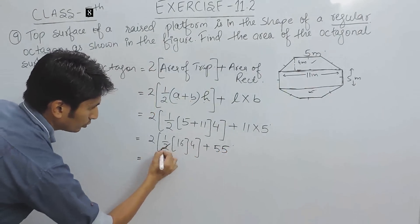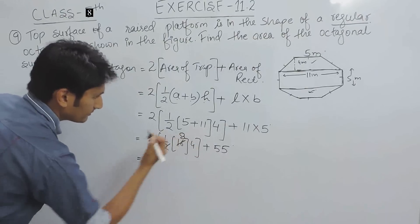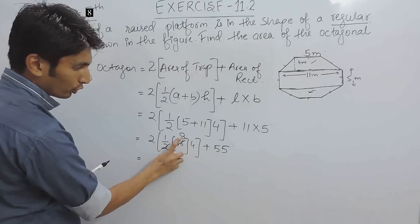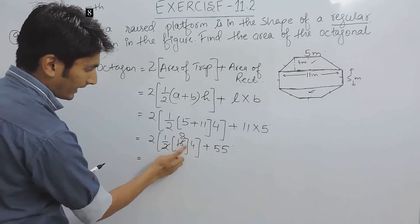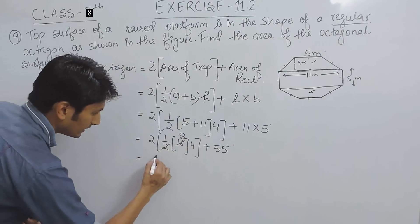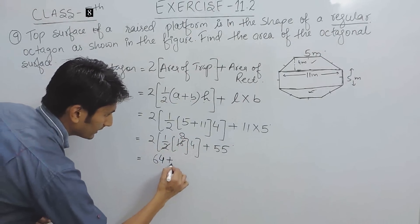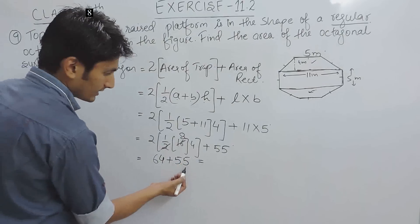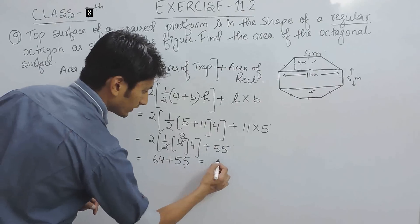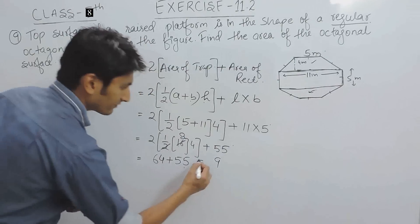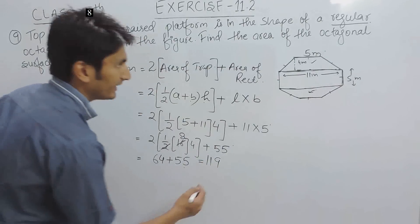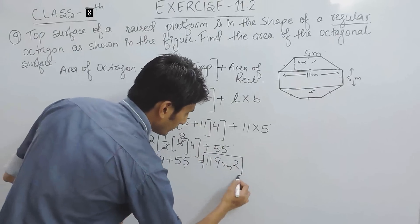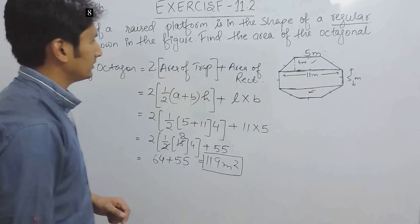So, this is 2 multiplied 8 times and this is 8 into 4 is 32 and 32 into 2 is 64 and plus 55 and this would be equal to 5 plus 4 is 9 and 6 plus 5 is 11. So, the area of the octagon surface would be 119 meter square.